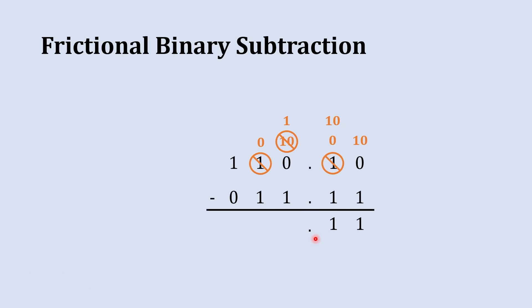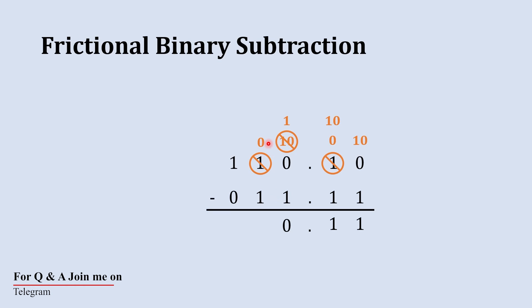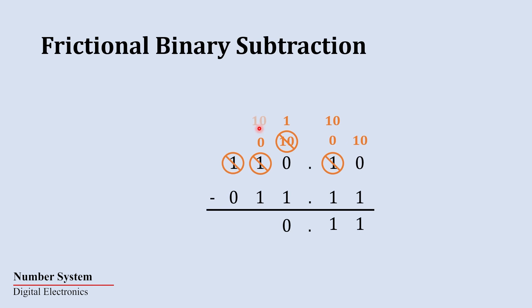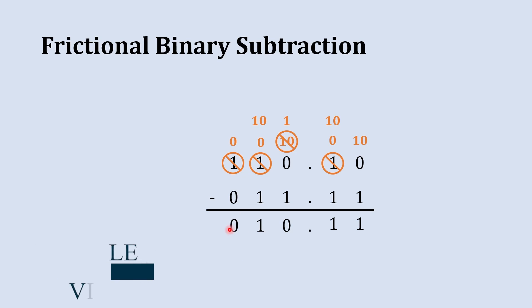Jumping to the next column: we subtract 1 from 1, giving 0. In the following column we try to subtract 1 from 0 — not possible, so we borrow from the next column which has a 1. It becomes 1 0 here and 0 there. Subtracting 1 from 1 0 gives 1. Then in the final column, 0 minus 0 gives 0.